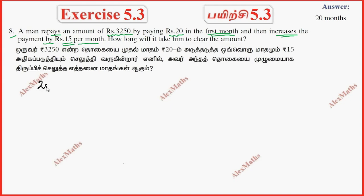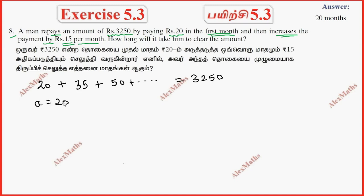Looking at this series: the first month payment is Rs.20, and it increases by Rs.15 per month. So in the series, A is Rs.20, D is Rs.15, SN is Rs.3,250, and we need to find N — the number of months.